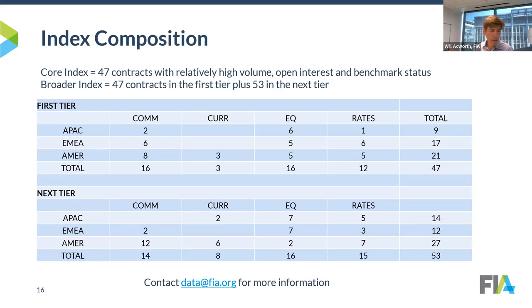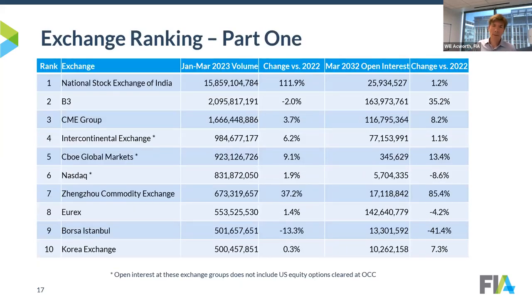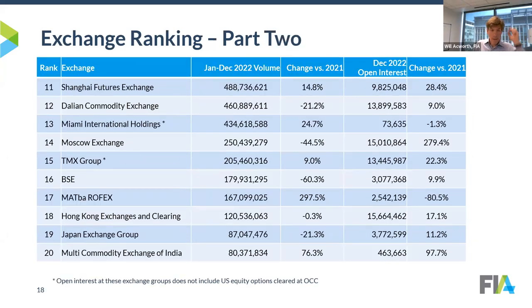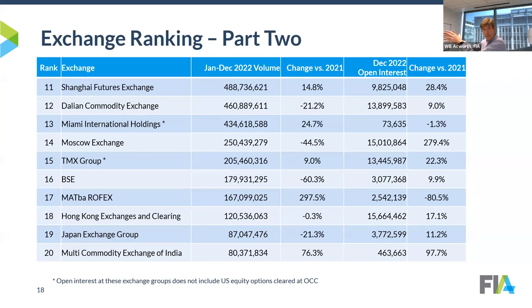On exchange rankings, NSE is way up at the top because of that tremendous growth. There's also a lot of growth in some of the Chinese exchanges. Regarding open interest rankings, it's important to note that Miami and TMX — like NASDAQ and ICE — do not include equity options cleared through the Options Clearing Corporation. That's why Miami shows a tiny amount of open interest; most of it is sitting at the OCC. What you see for Miami is just a bit of futures trading on what used to be the Minneapolis Grain Exchange.